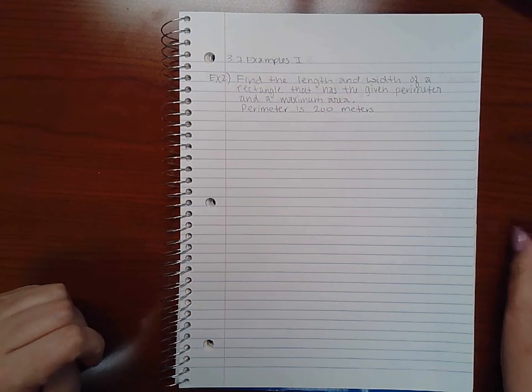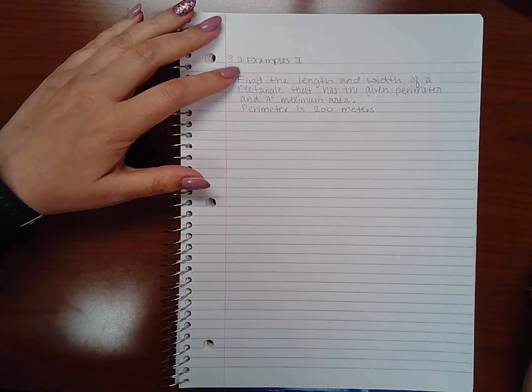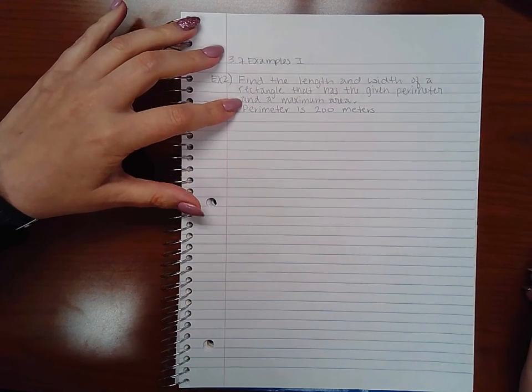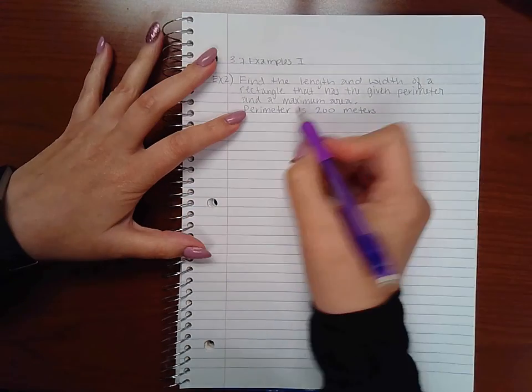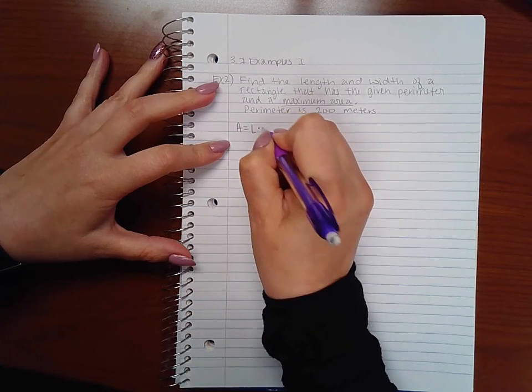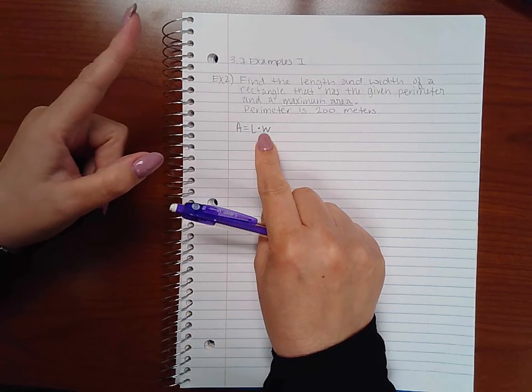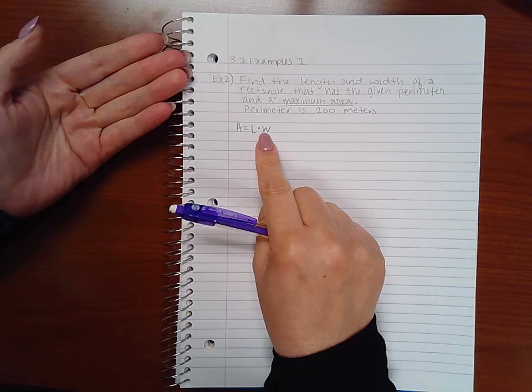This is a second example from section 3.7. Here it says find the length and width of a rectangle that has a given perimeter and a maximum area. Since they want maximum area, that's going to be my primary equation. However, I have two variables, not one variable, so I will need to use a secondary equation.